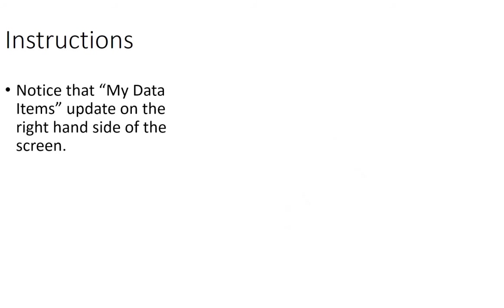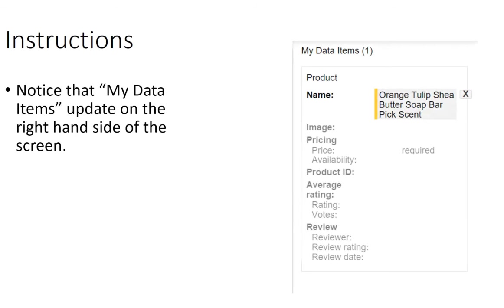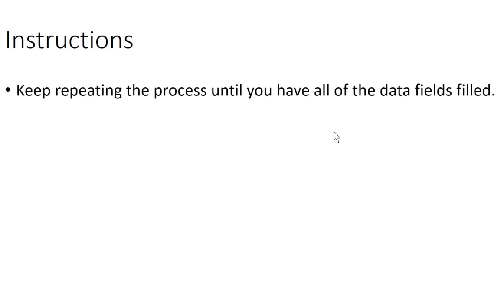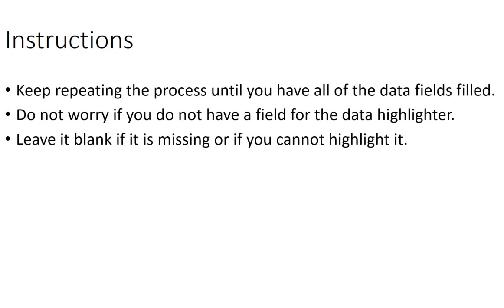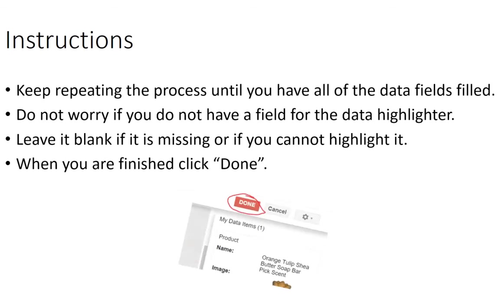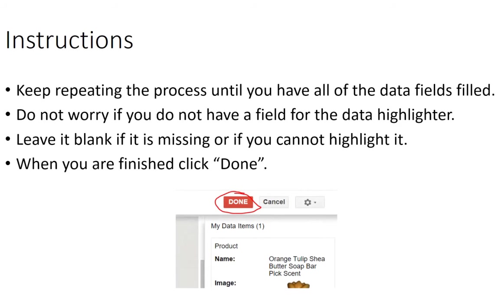Notice that the Data Items panel updates on the right-hand side of the page as soon as you highlight something. You'll see under the product the name — orange tulip shea butter soap bar — has now been filled in. Keep repeating the process until you've filled out all of the data fields. Don't worry if you do not have a field for that data item — leave it blank. If it's missing or you can't highlight it, just skip it. When you're finished, click Done.